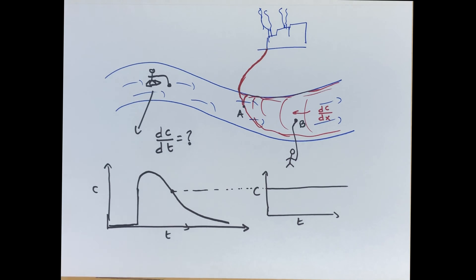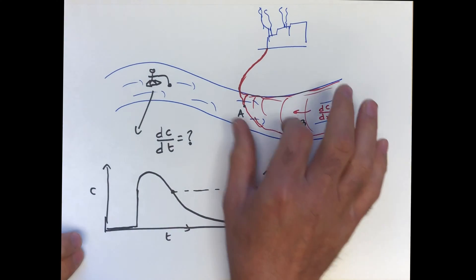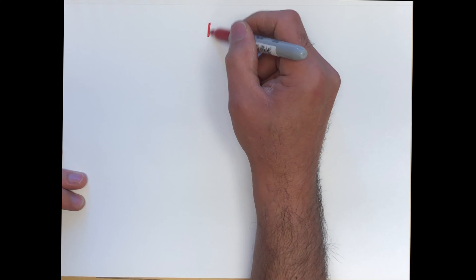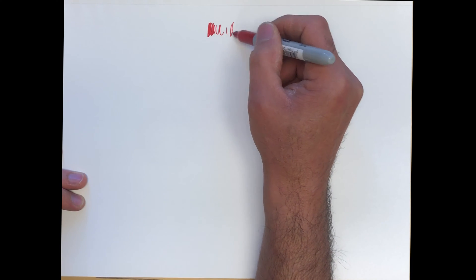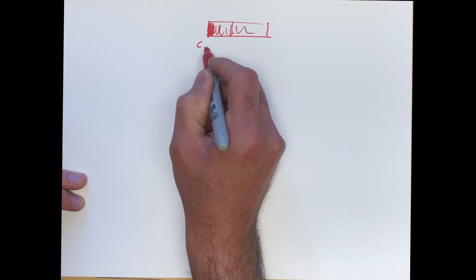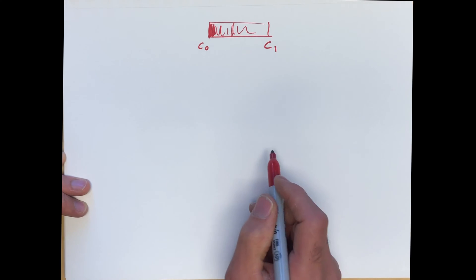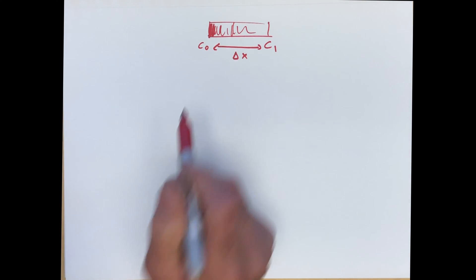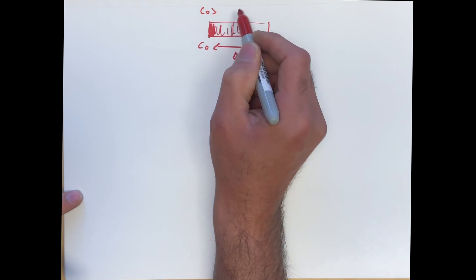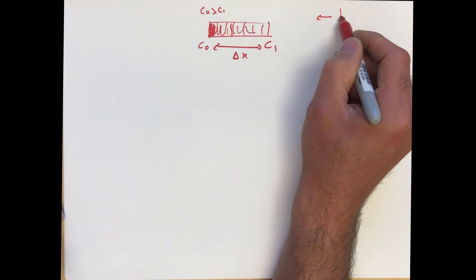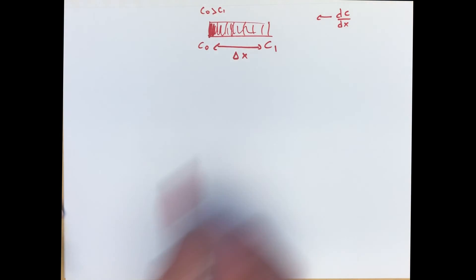We're going to zoom in over the region where there is a concentration. We're going to assume there is a gradient of concentration over a portion in the river — there is C0 here and C1 there, spaced by a distance delta X. C0 is greater than C1, so there's a higher concentration upstream, and the gradient is dc/dx.